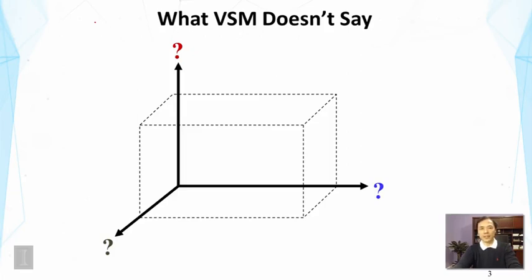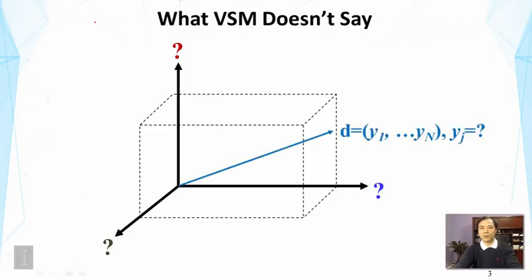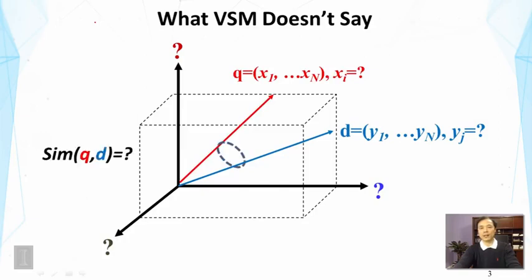As we discussed in the previous lecture, the vector space model is really a framework. It doesn't say how we should define the dimensions, how we place a document vector in this space, how we place a query vector, and finally it does not say how we should measure the similarity between the query vector and the document vector.